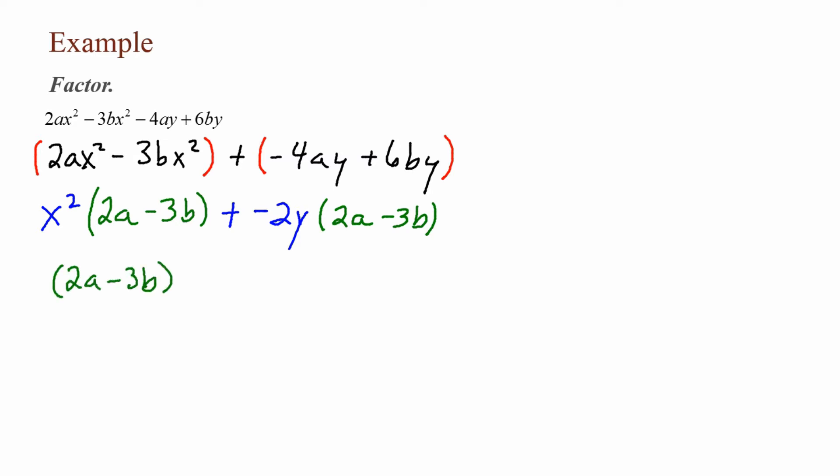Factoring out (2a minus 3b), I'm left with (x² minus 2y). So my final answer is, in the first parenthesis, (2a minus 3b), and in the second parenthesis, (x² minus 2y). I could always check my answer by using FOIL.